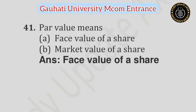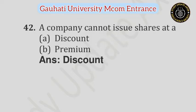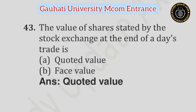Question number 41: Par value means — Option A: Face value of share, Option B: Market value of share. Answer is Face value of share. Question number 42: A company cannot issue share at a — Option A: Discount, Option B: Premium. Answer is Discount. Question number 43: The value of share stated by the stock exchange at the end of the day's trade is — Option A: Quoted value, Option B: Face value. Answer is Quoted value.